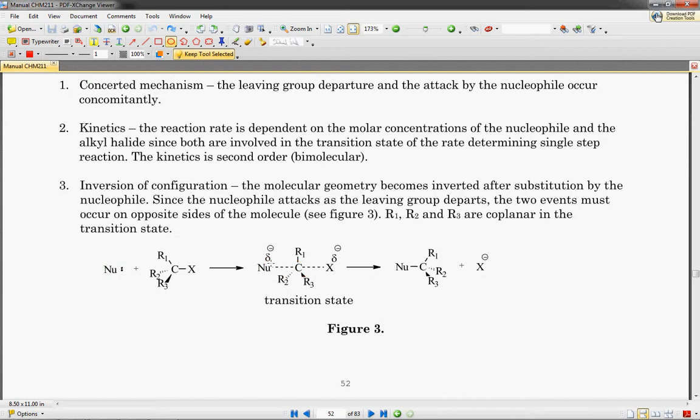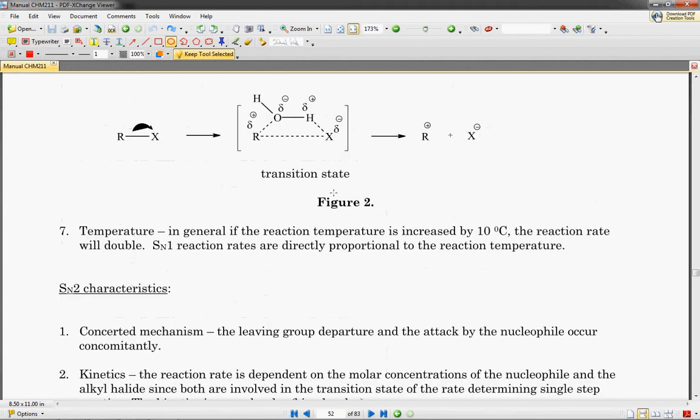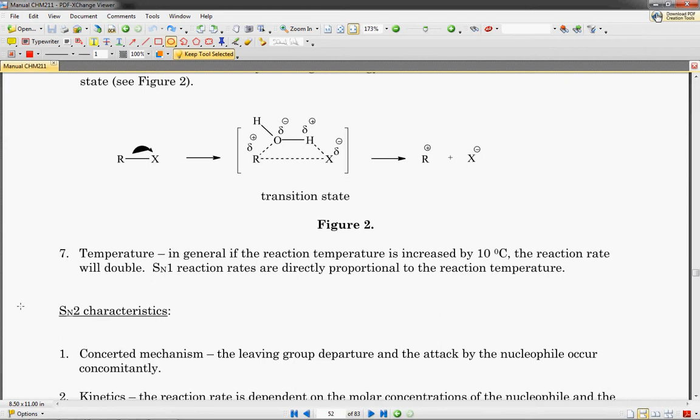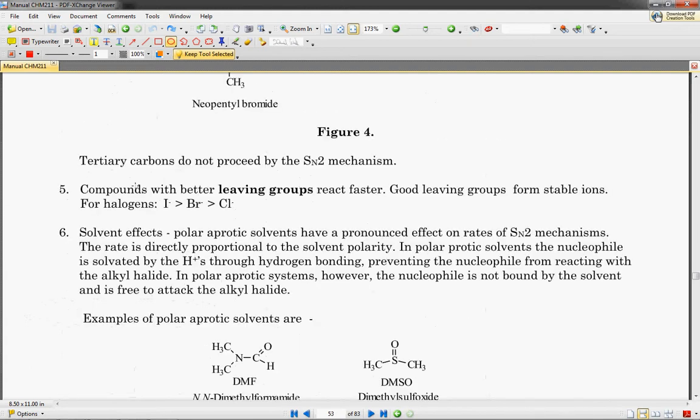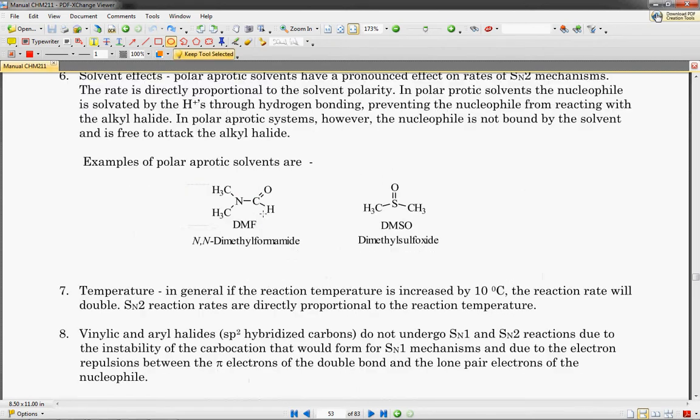Therefore the nucleophile bonds and then the X leaves. There are various situations under which SN2s are favorable and SN1s are favorable. It talks about them in length in the manual, so please read through that.